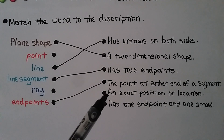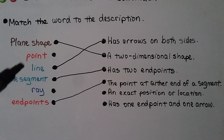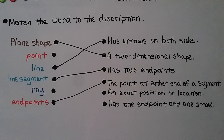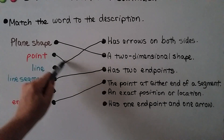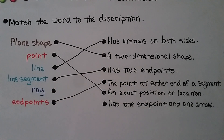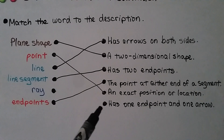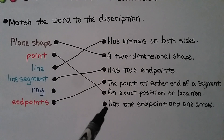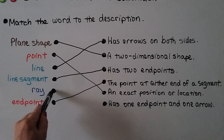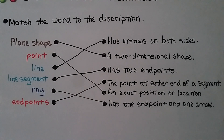What about an exact position or location? If you said point, you're right — a point is an exact position or location. The only one left is ray, and it says it has one endpoint and one arrow. Yes, that is a ray — it's got one endpoint and one arrow, so we connect those.